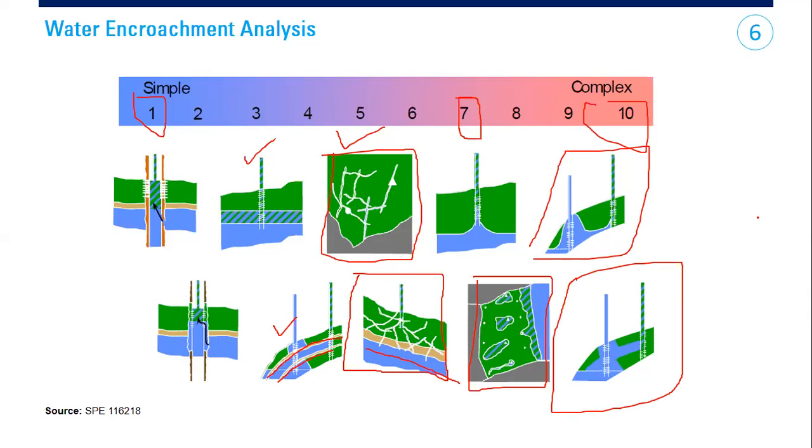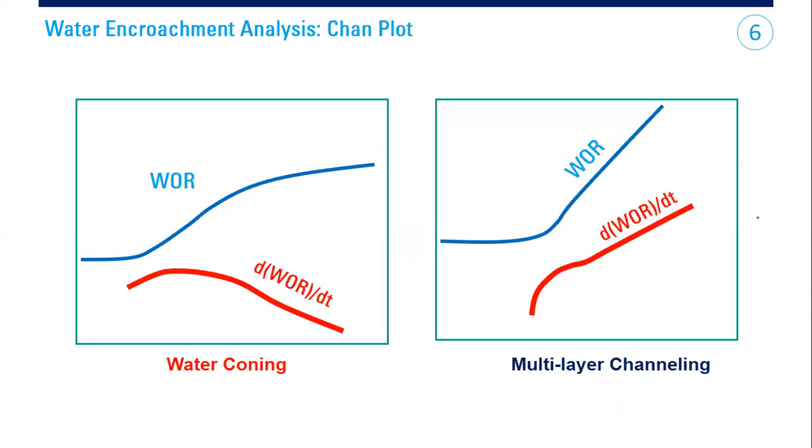And as a reservoir engineer, how we do the analysis? The main analysis that we can do is using Chon plot. Using Chon plot, you just plot the WOR, water-oil ratio, and the derivative with respect to time. If you have this trend, it means that you suffer water conning. And you will get multilayer channeling if your water-oil ratio and the derivative increase like this one, with positive slope.